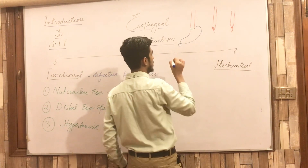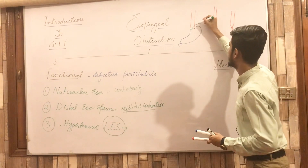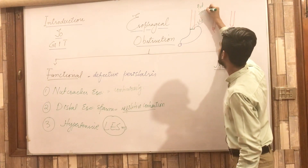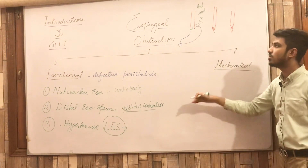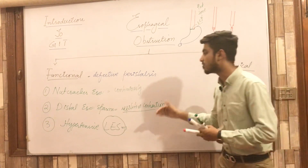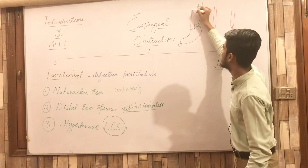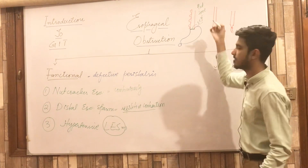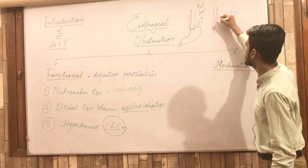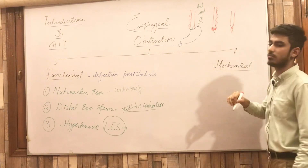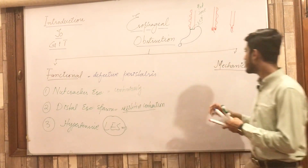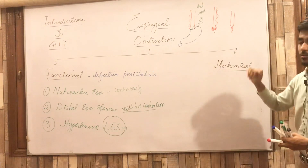The lower esophageal sphincter is at the junction between the esophagus and the stomach. In hypertensive lower esophageal sphincter, there is increased tone of the lower esophageal sphincter, causing dysphagia — the person feels difficulty in swallowing. The peristalsis in the proximal, middle, and distal esophagus is normal, but the defect is in the lower esophageal sphincter. In contrast, nutcracker esophagus and distal esophageal spasm have abnormal peristalsis due to uncoordinated muscle movement.